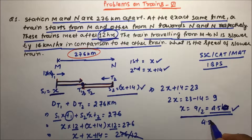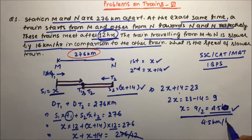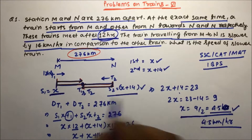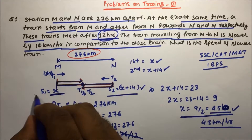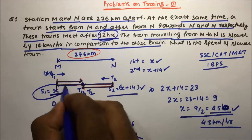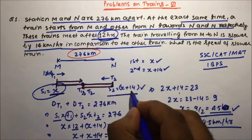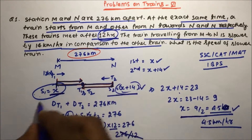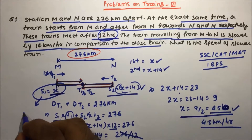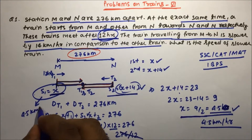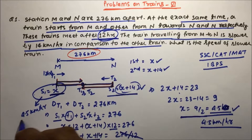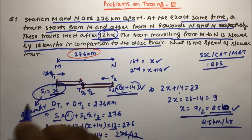That means 4.5 km per hour is the speed of the slower train. The slower train is the one with speed x, since x+14 is the faster one. So the slower train's speed is 4.5 km per hour.